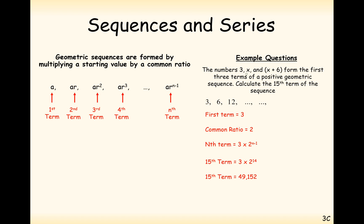The way we worked out the common ratio was by looking at the ratio between the second and the first term, and the third term and the second term.